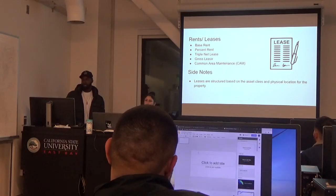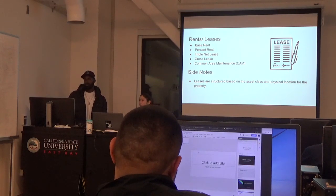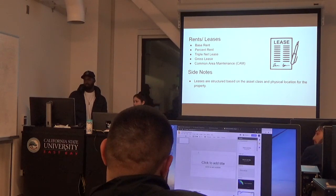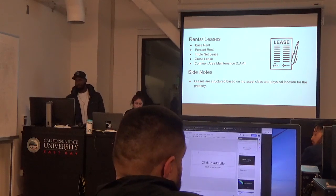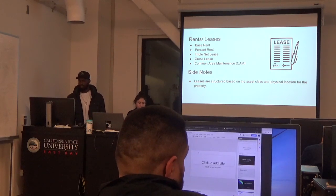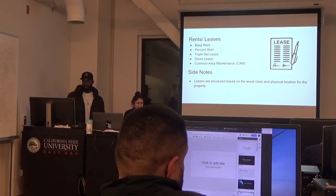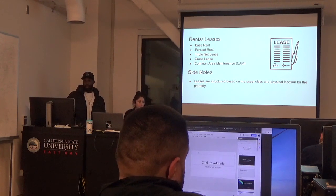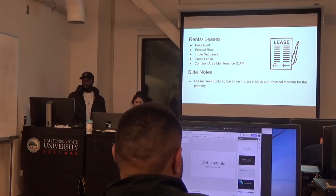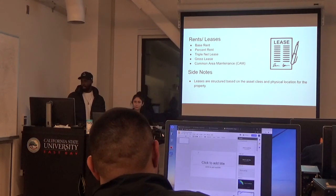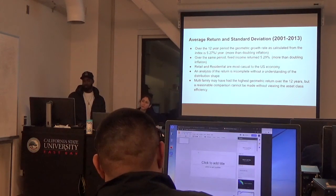The leases — the base rate, receiver rate, triple net lease, gross lease, and common period of maintenance — and the site level: the leases, the structure, the asset class, and the location for the property.